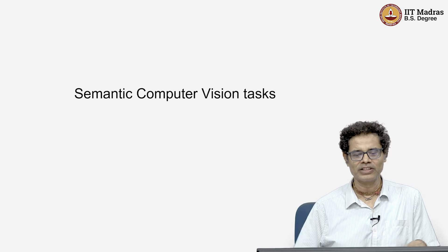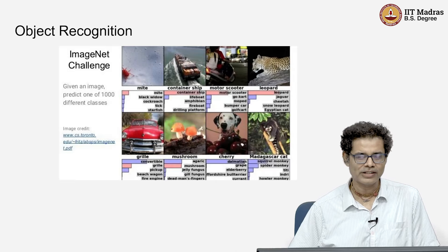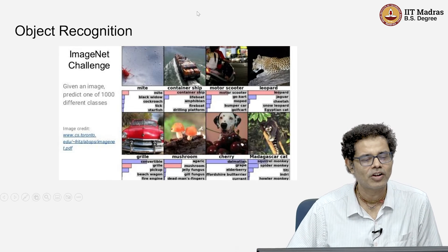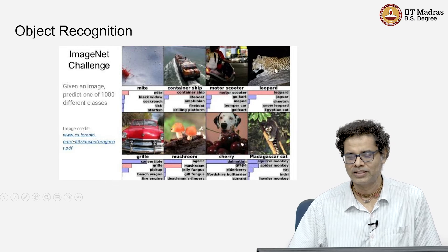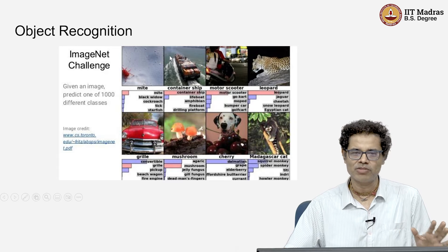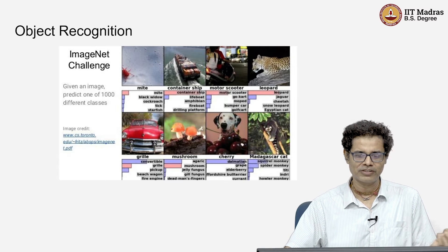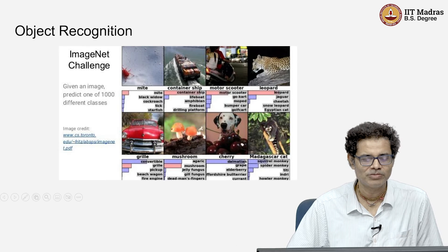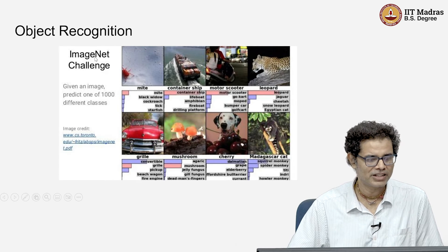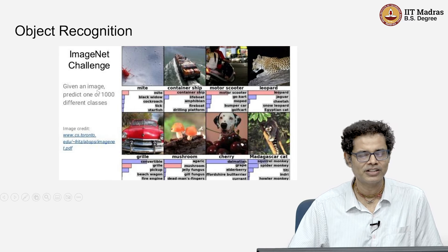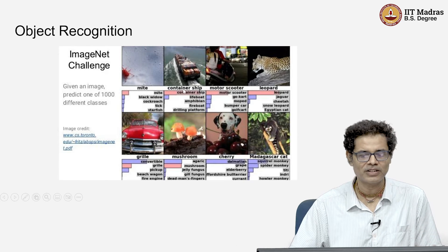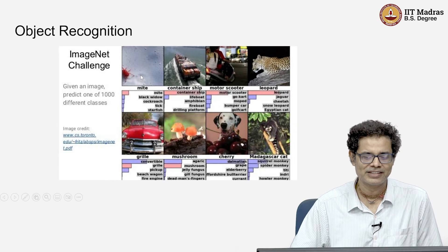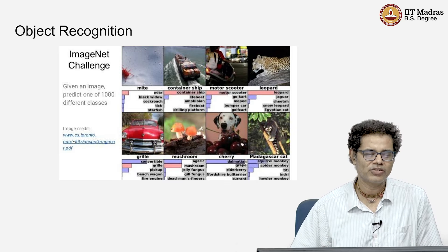Now we look at some semantic computer vision tasks. The first is object recognition — given an image, for example a container ship or a leopard, the image has one dominant object and we just want to label it. There is a famous dataset and challenge called ImageNet, which has a thousand classes, each with a thousand instances. Using that, we can do recognition.